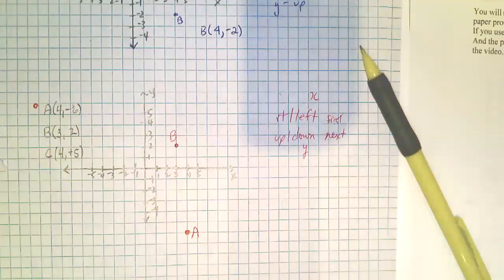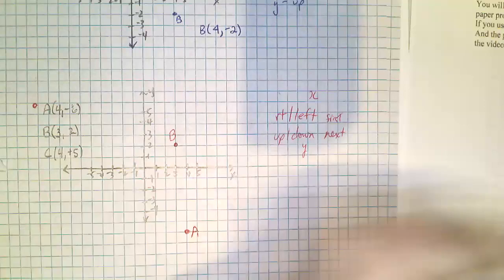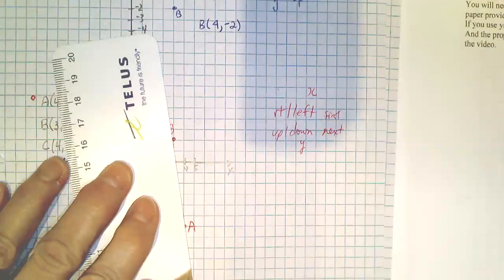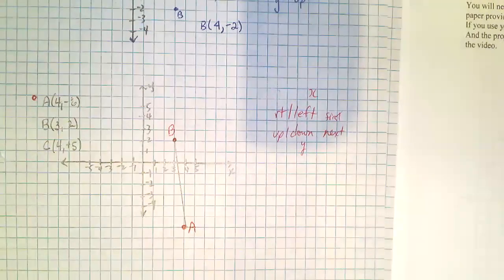The third point, and then it says connect them. So I'm going to take my pencil, use a ruler so that it's neat and connect A to B because B, A was first, B was second.